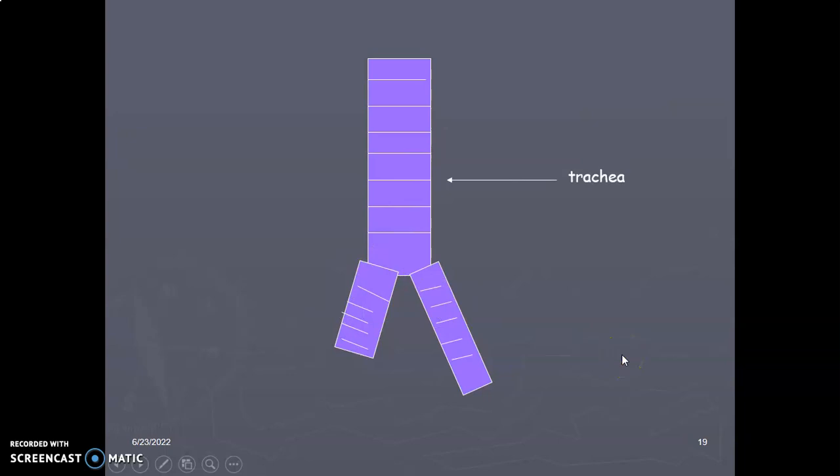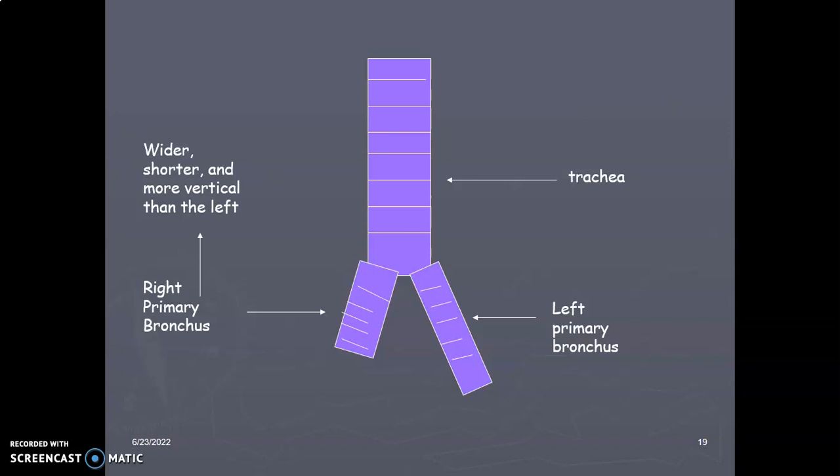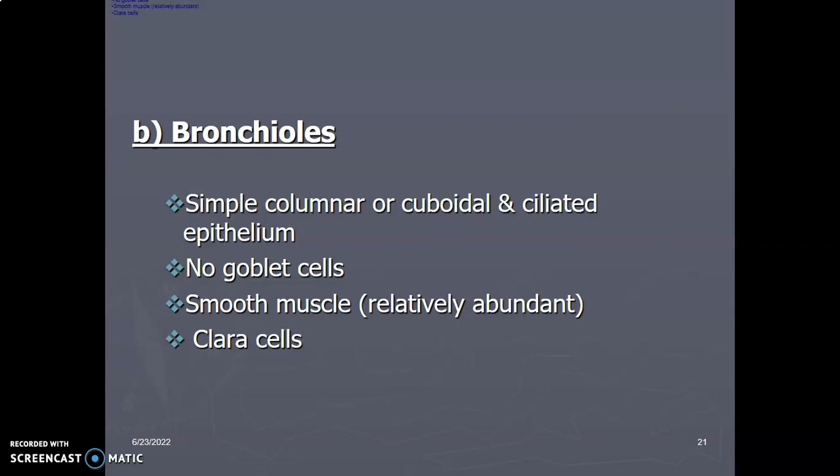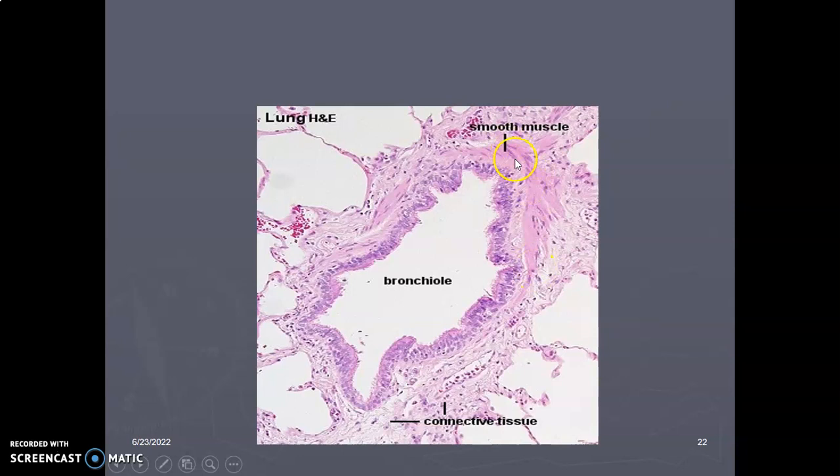The primary bronchi have the same histology as the trachea — pseudostratified columnar ciliated epithelium with goblet cells, the submucosa has serous mucous glands, there is hyaline cartilage and some smooth muscle fibers. The bronchioles have simple columnar or cuboidal ciliated epithelium, but you start losing the goblet cells while smooth muscles increase. There is also the presence of Clara cells in the bronchioles. You can appreciate the smooth muscle cells and the epithelium in the histological slides.